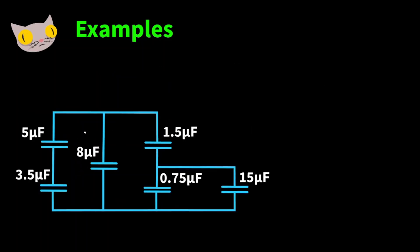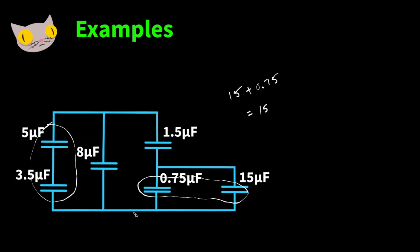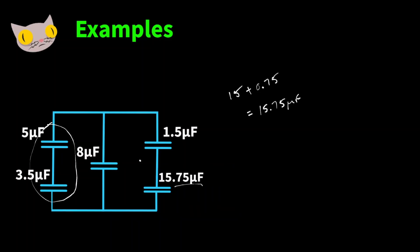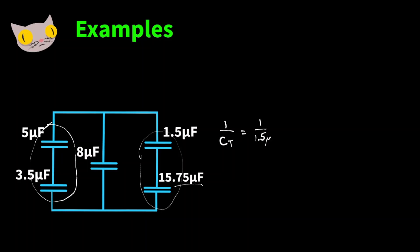How about this one? We have a lot more capacitors going on, so let's figure it out. We have two capacitors in series on this side and two capacitors in parallel on this side. The parallel ones we can just add up: 15 plus 0.75 equals 15.75 microfarads. Now the two series capacitors: 1 over CT equals 1 over 1.5 microfarads plus 1 over 15.75 microfarads, which leaves us with about 1.37 microfarads.